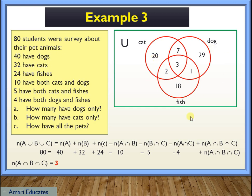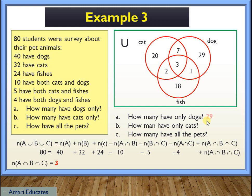Now we have completed the diagram. Let us answer the questions. How many have only dogs? 29. How many have only cats? 20. And how many have all the pets? The intersection? 3.